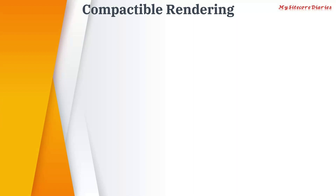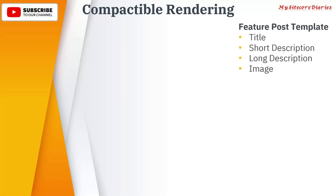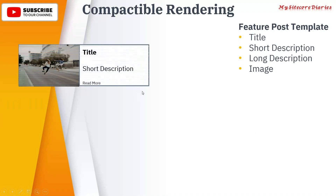As the name suggests, it is the rendering which are compactable to each other. So what does it mean? Let's take an example. You have a feature post template which has content like title, short description, long description, and image. And there are two components where one component is displaying image, title, and short description like this.